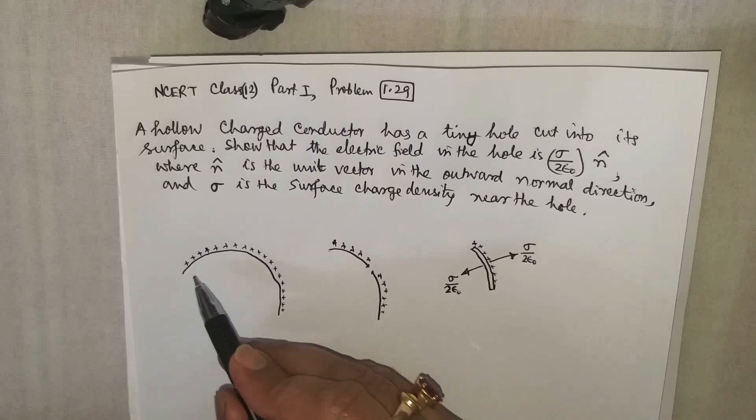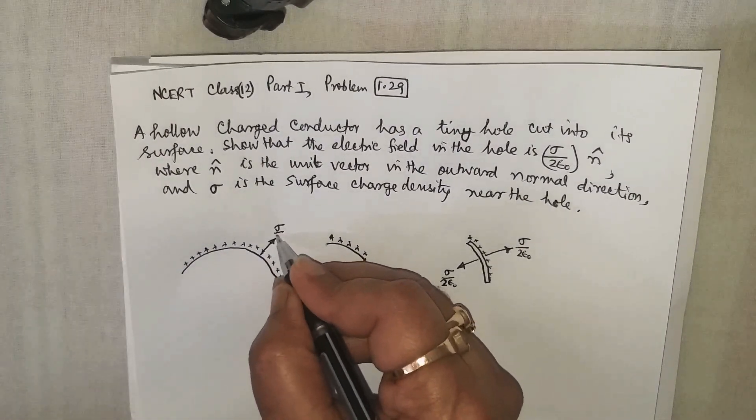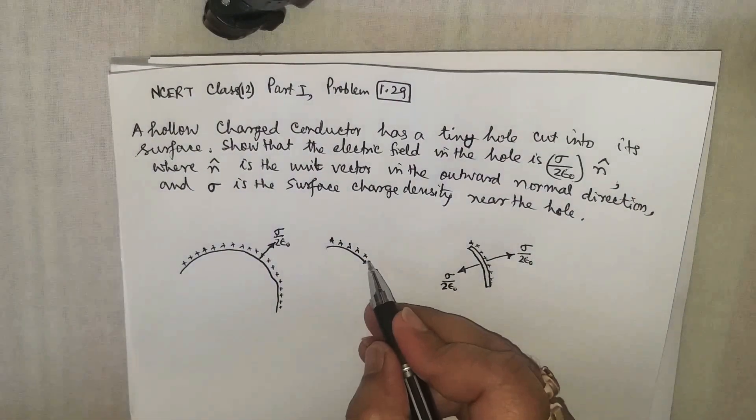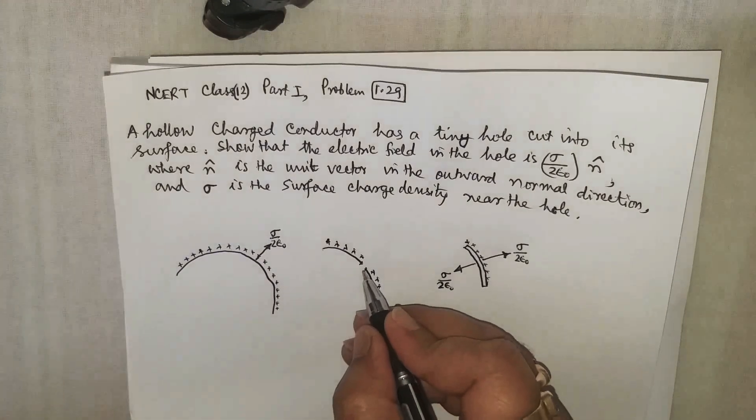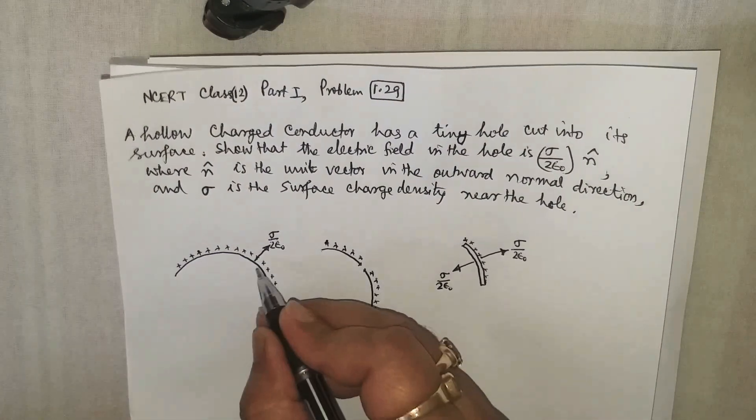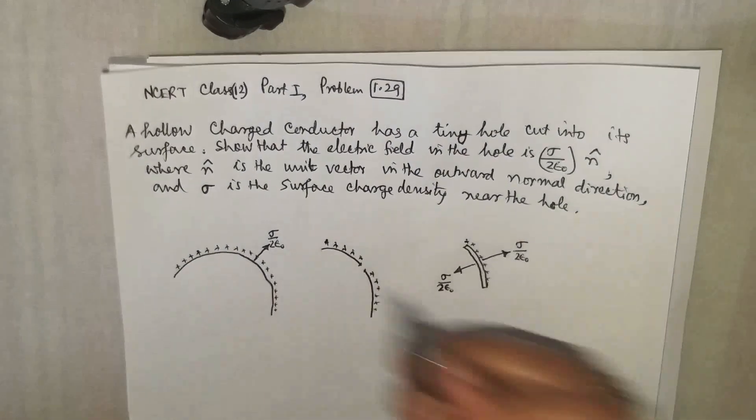For a particular conductor, very near at any point, this is also sigma divided by 2 epsilon naught. Now when we have marked a small gap, then what will happen? Just inside the gap before the gap was created, the field is zero, and just outside the gap the field was sigma by 2 epsilon naught.